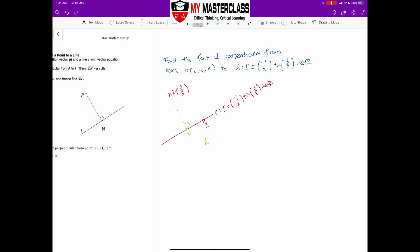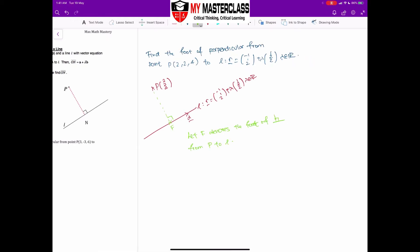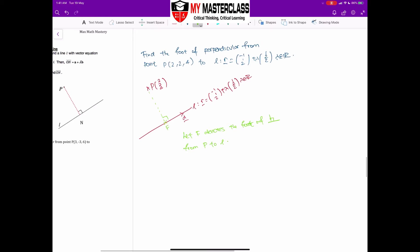So first, I'm going to let F denote the foot of perpendicular from point P to line. Some schools require to spell out foot of perpendicular, so please follow your school. So from here, take note that F actually lies on the line. So I can say that since F lies on the line, which means that F will fit in the criteria of R.